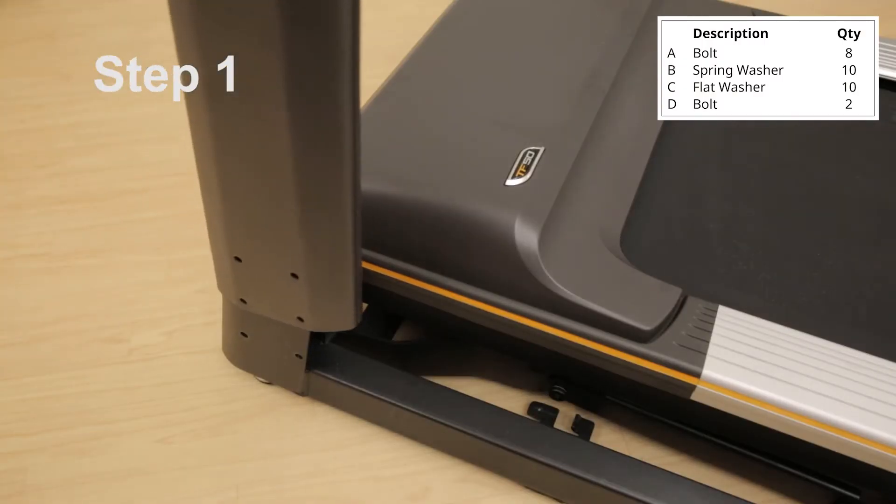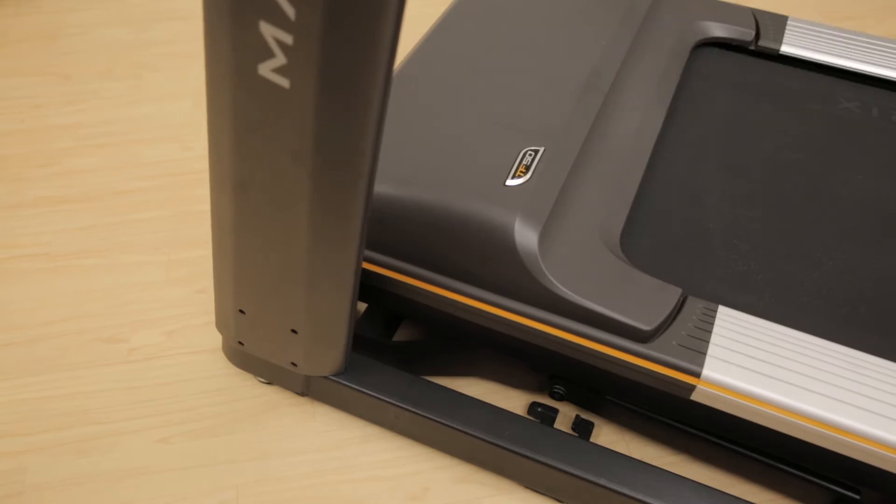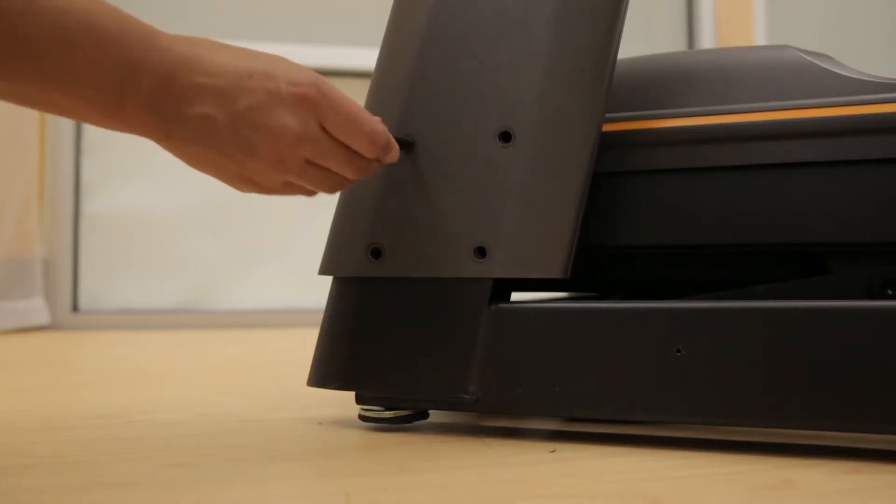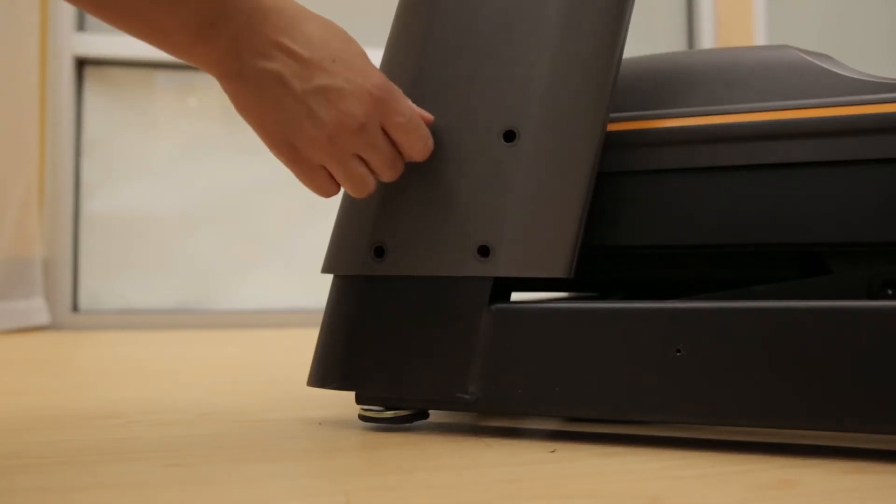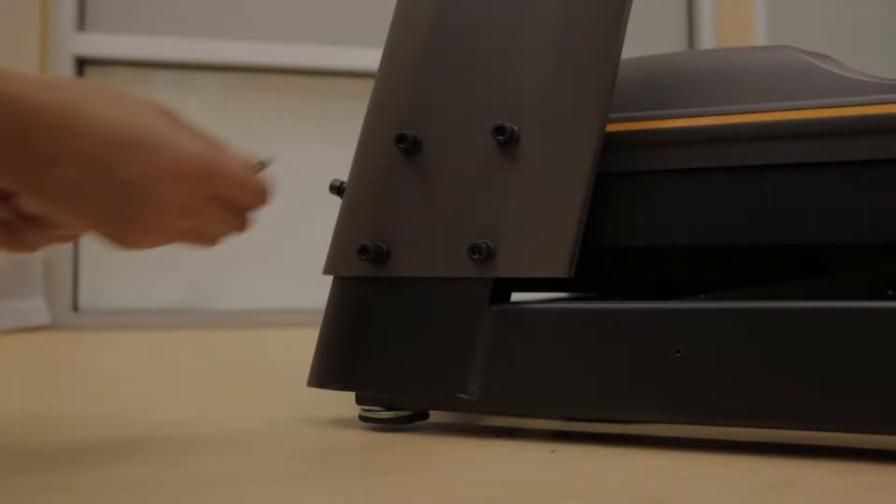Slide the left console mast onto the base frame. Using a 6mm Allen wrench for the side bolts and a 5mm Allen wrench for the front bolt, lightly tighten the bolts.